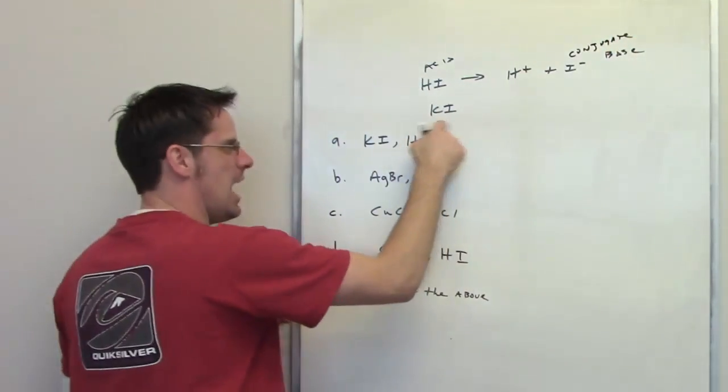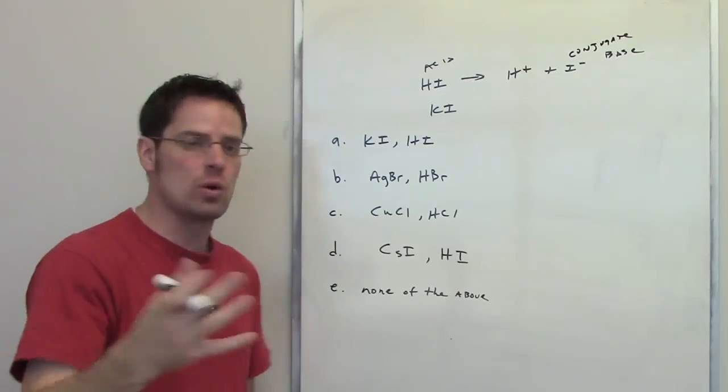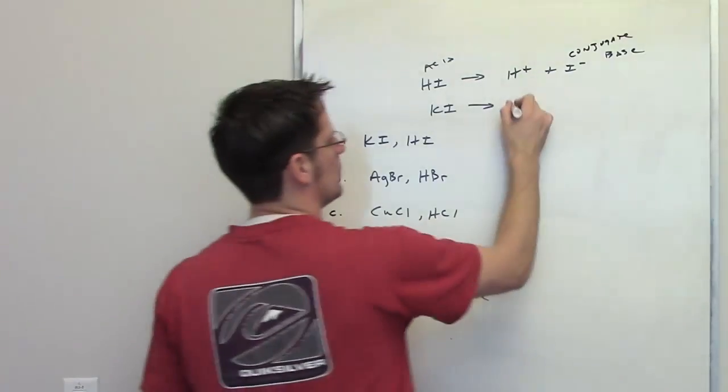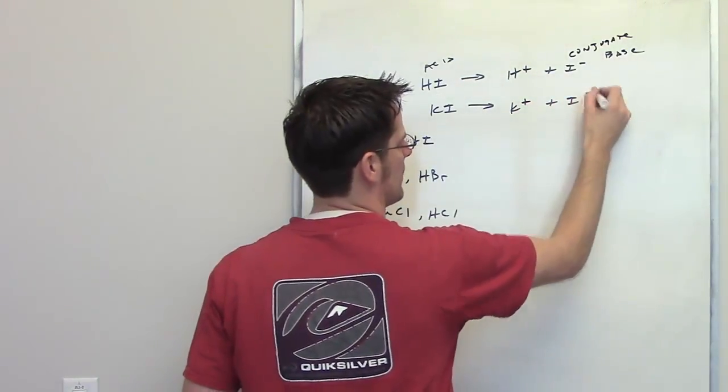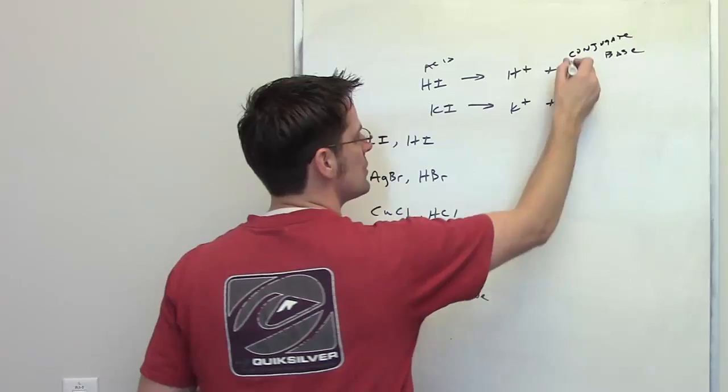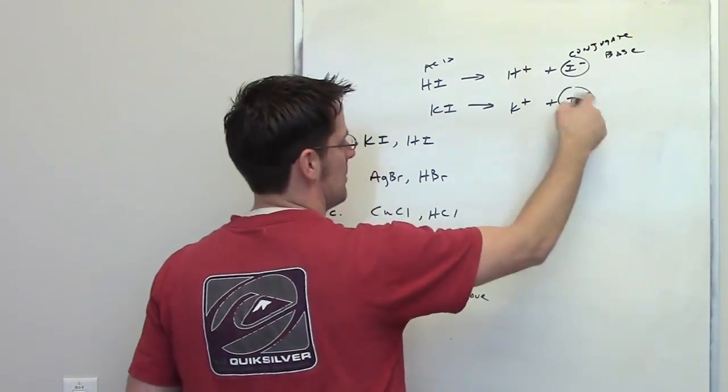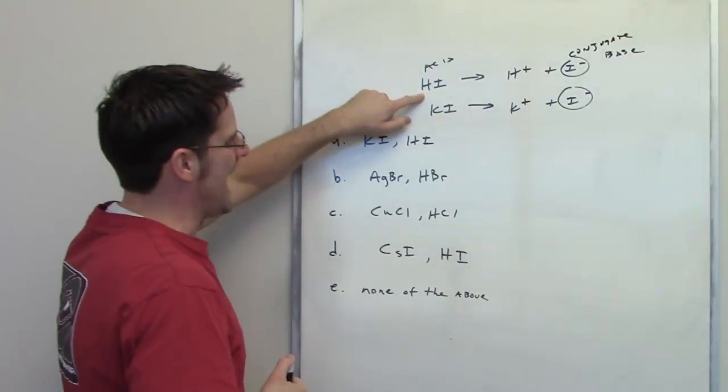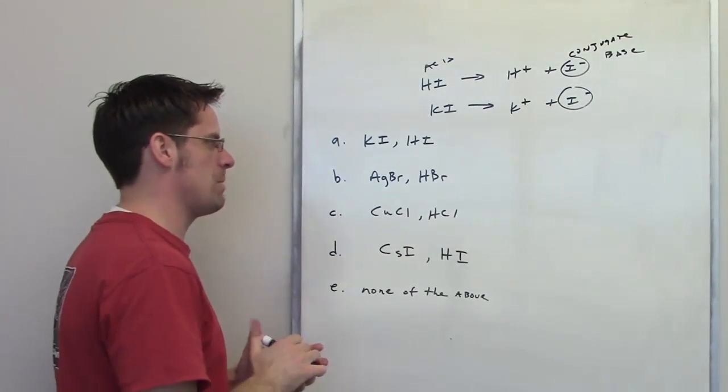Is KI a source of that conjugate base? Well, yeah, when you throw it in water because KI is very soluble in water, it will dissociate to form K plus and I minus. I minus is the same conjugate base as the conjugate base of HI. So this is indeed an acid and a source of its conjugate base.